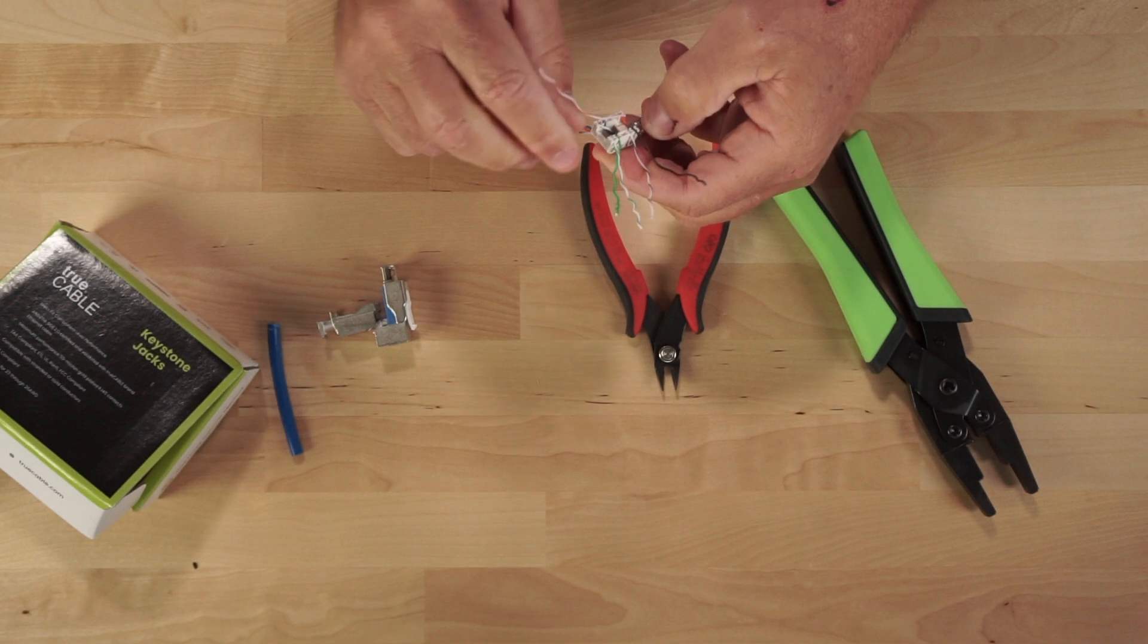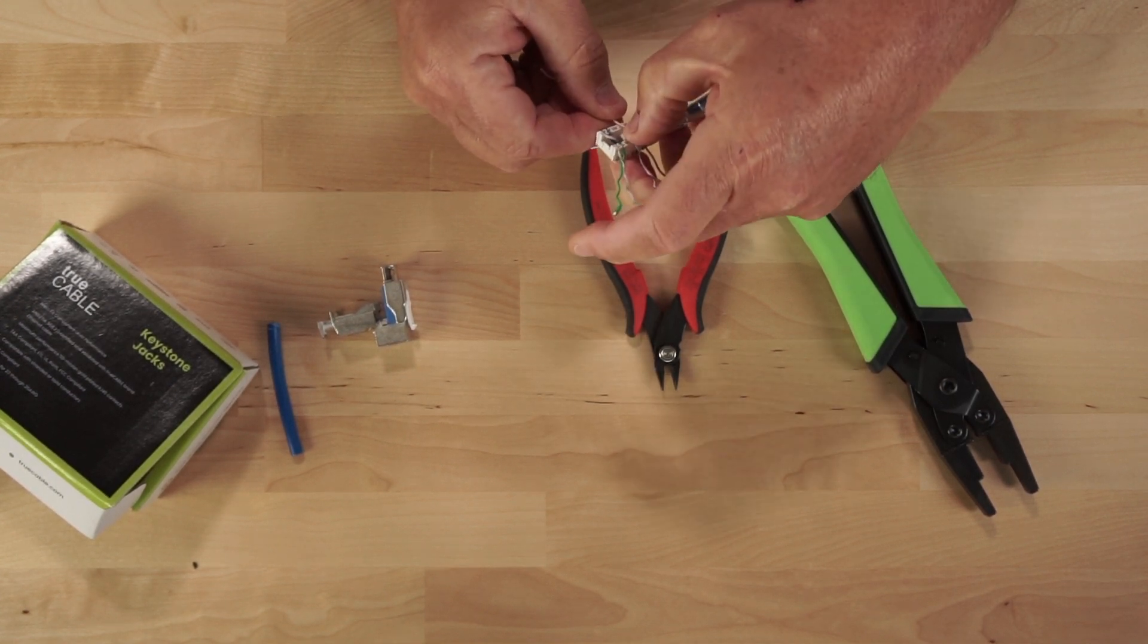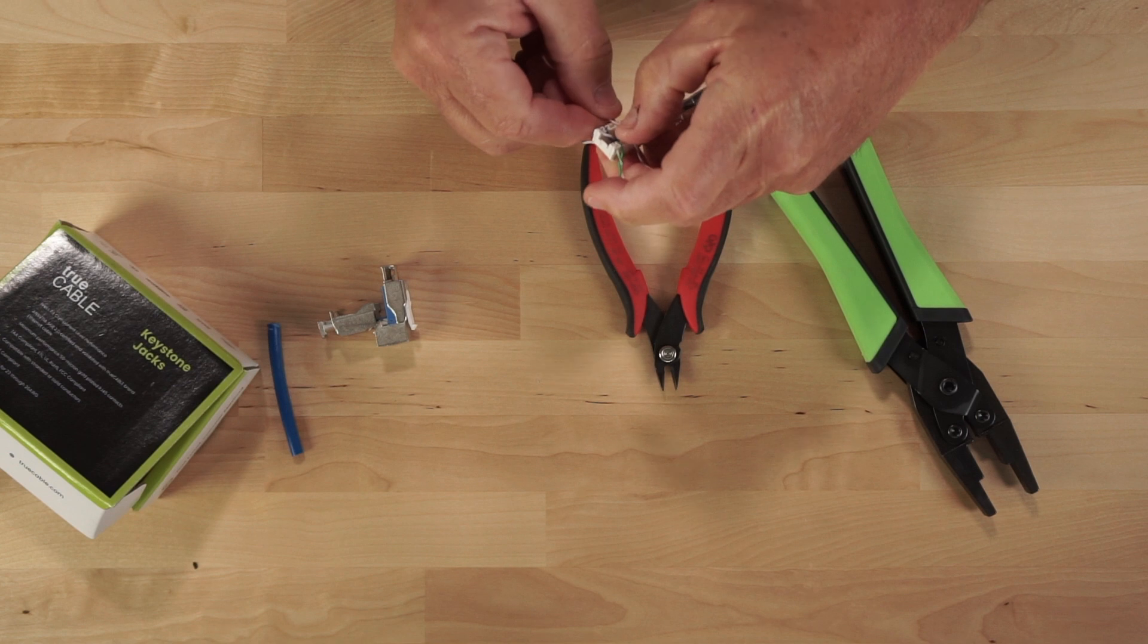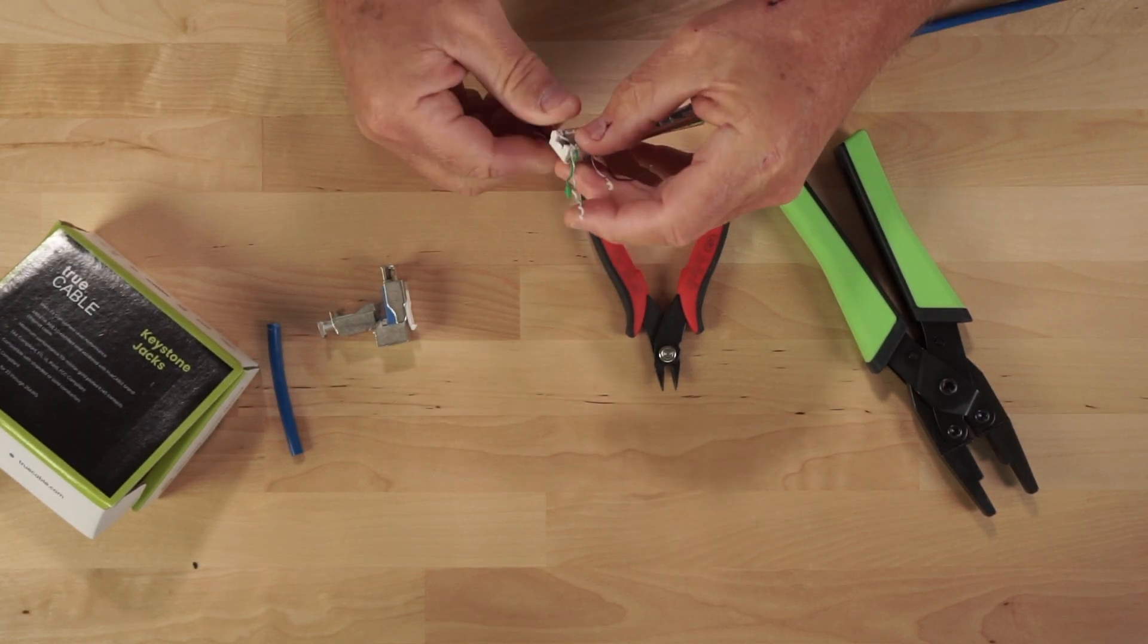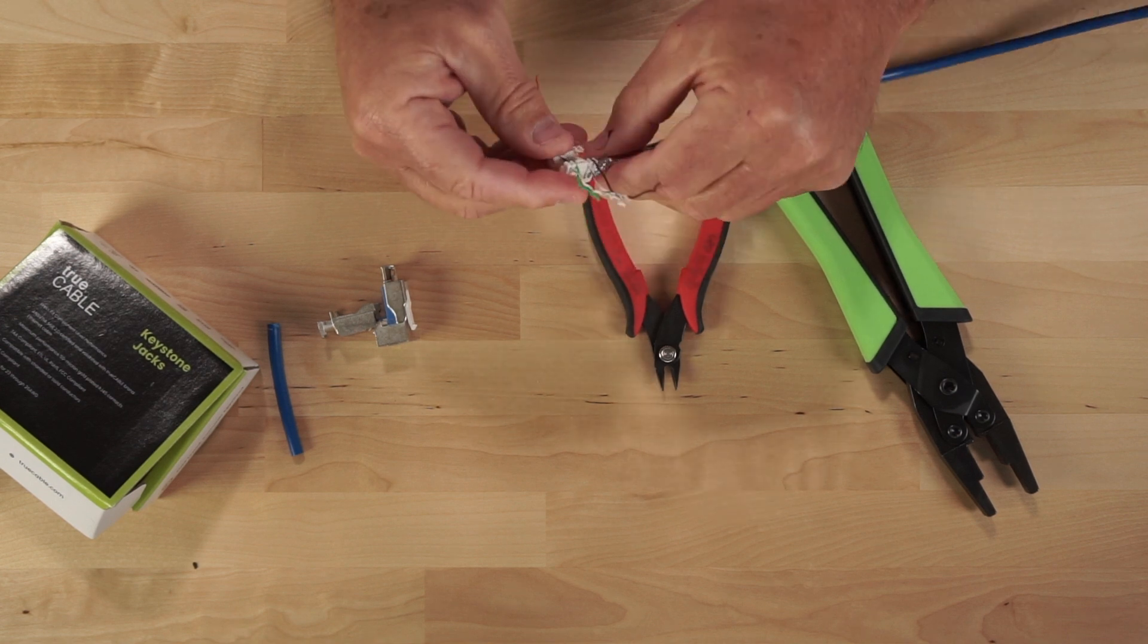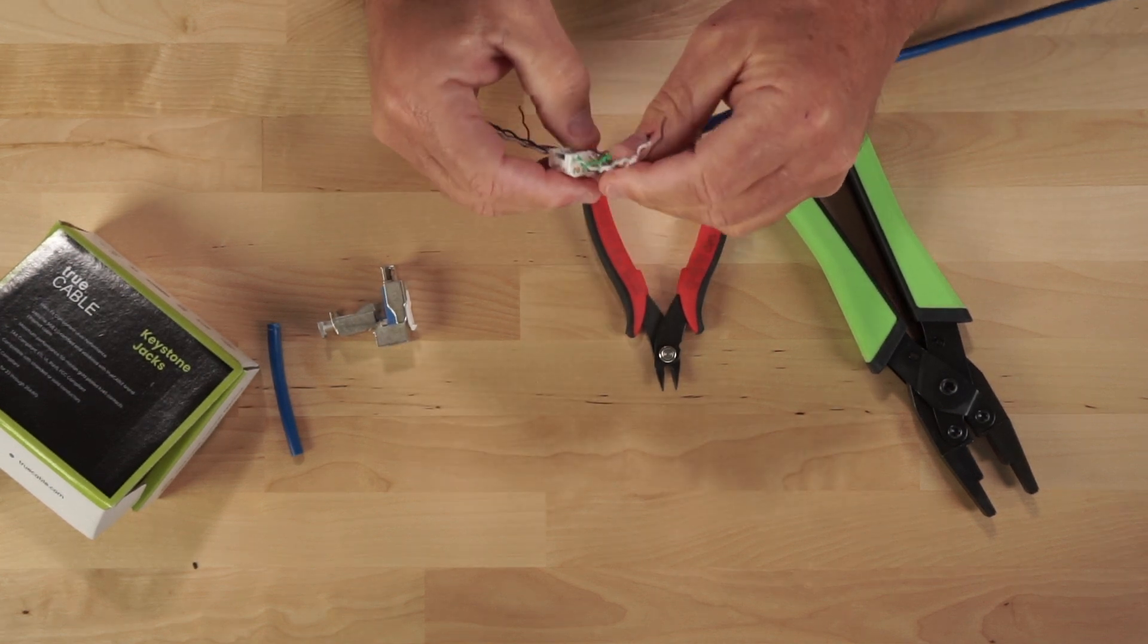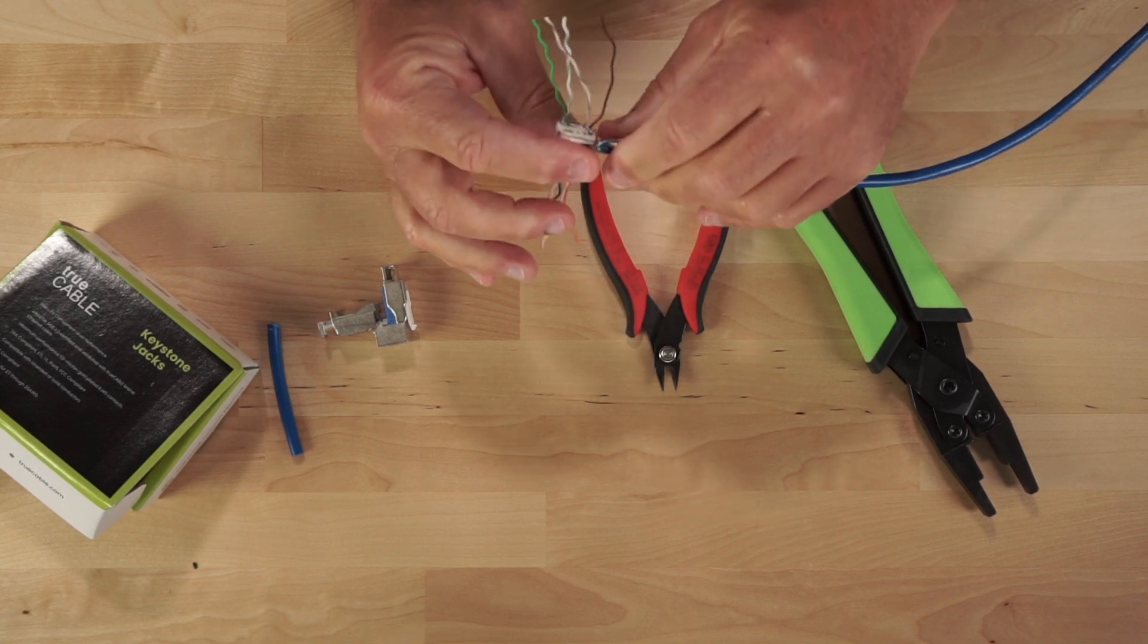Let's get the orange in there and the white orange. It's a little tricky sometimes, especially when you have big fingers like me. All right, so now that we have our cables at least in the slots, first thing you want to do is before you cut anything away is check your pattern. Make sure you have your cables in the right place.